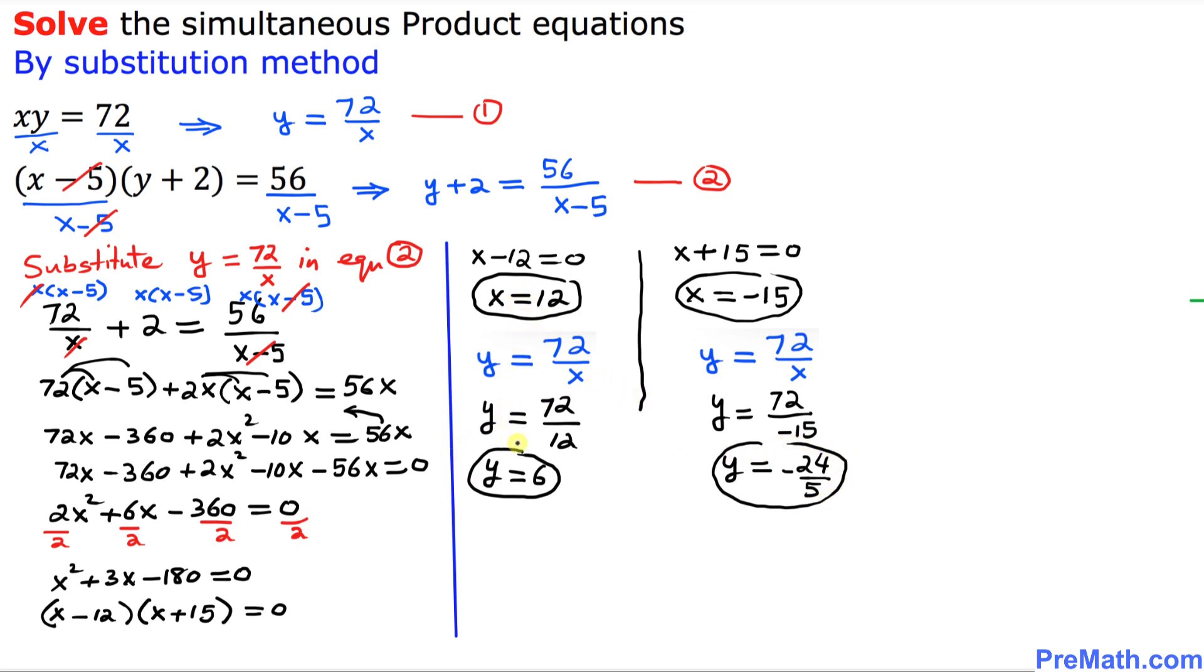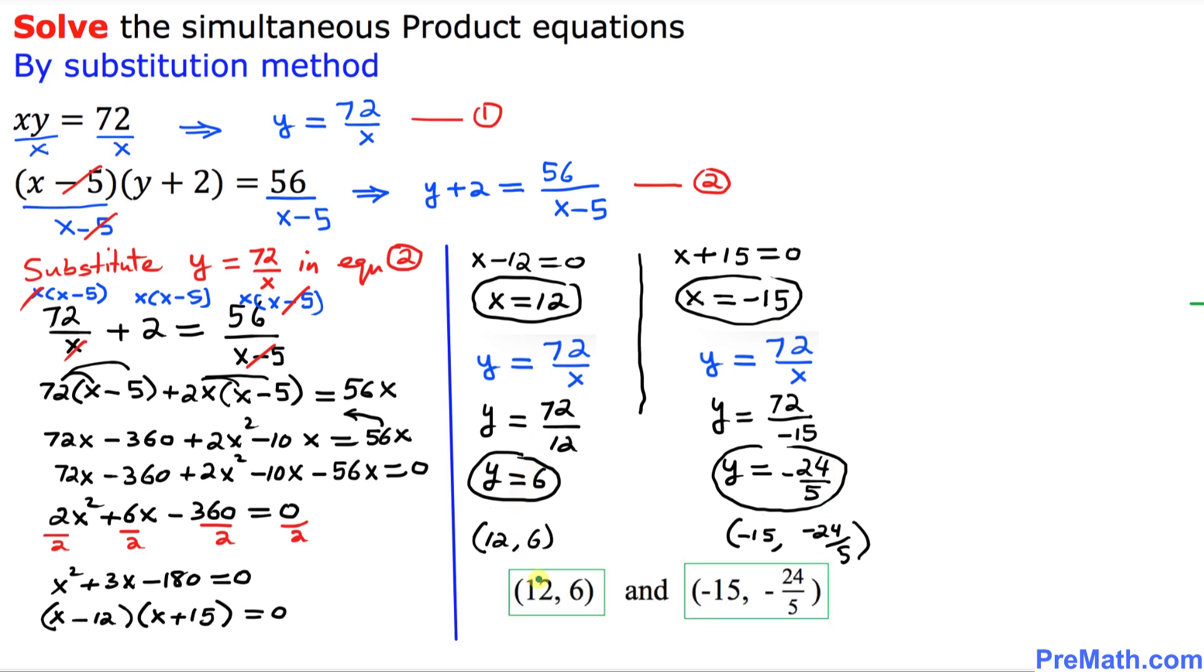So over here, we're going to have one other pair, which is going to be over here, 12 comma 6. That means this is our x value and this is our y value. Likewise, over here, our ordered pair is going to be negative 15 comma negative 24 over 5. And once again, this is our x value and this is our y value. And hence, these are our final answer to our given simultaneous product equations. Thanks for watching and please don't forget to subscribe to my channel for more exciting videos. Bye.